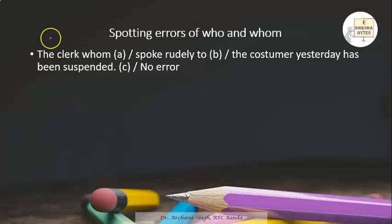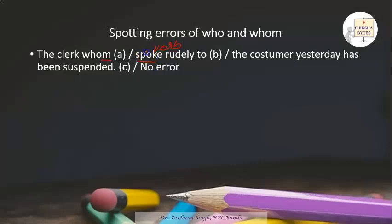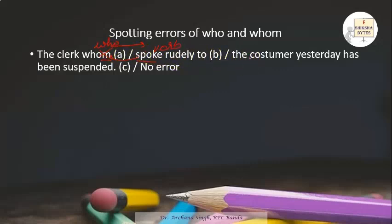First sentence: 'The clerk whom spoke rudely to the customer yesterday has been suspended.' Here, 'spoke' is a verb. We have studied that 'who' is always followed by a verb — so using 'whom' here is incorrect. The error is in using 'whom' before a verb. The correct sentence is: 'The clerk who spoke rudely to the customer yesterday has been suspended.'